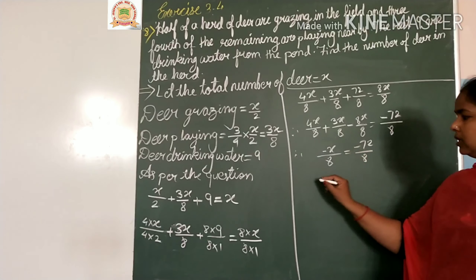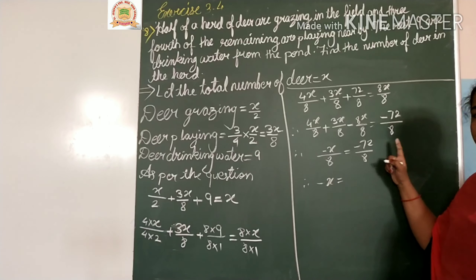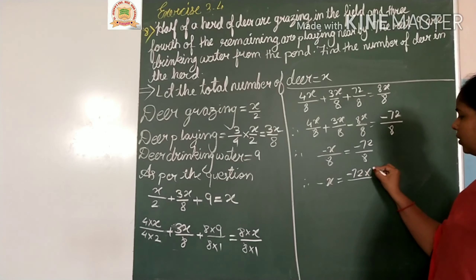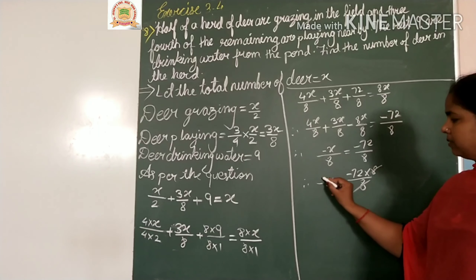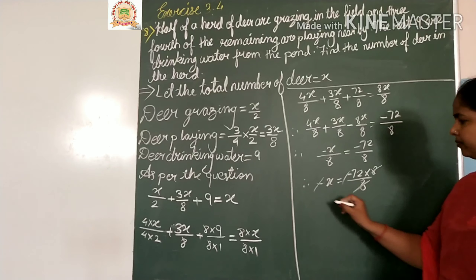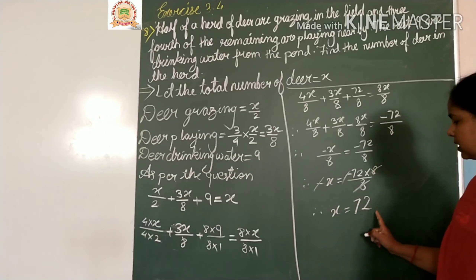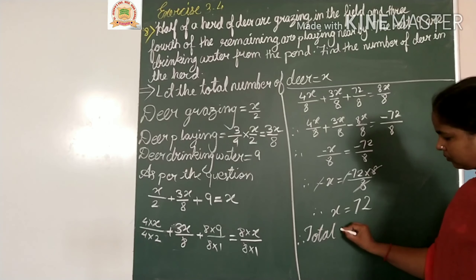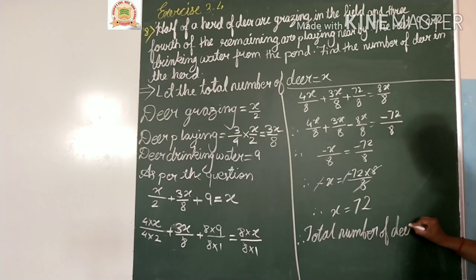Therefore, minus x by 8 equals minus 72 by 8. Cross-multiplying and cancelling the 8s, the two negatives cancel, giving x equals 72. Therefore, the total number of deer in the herd is 72.